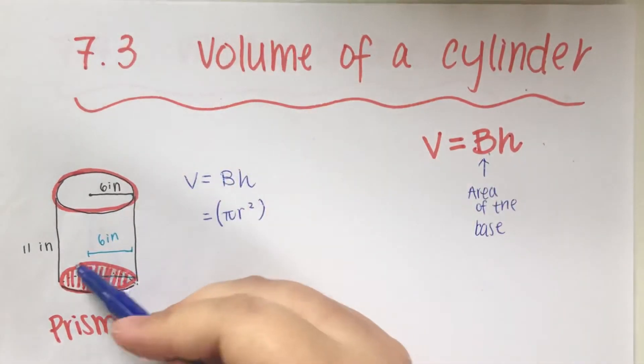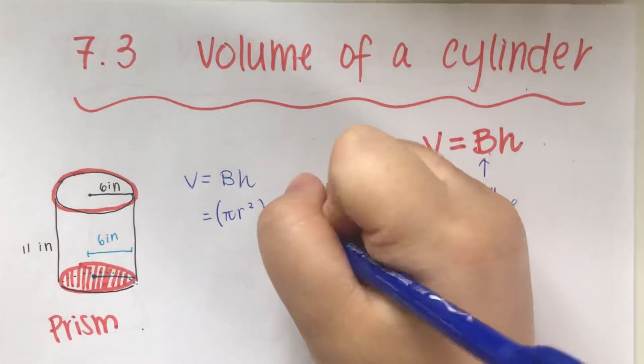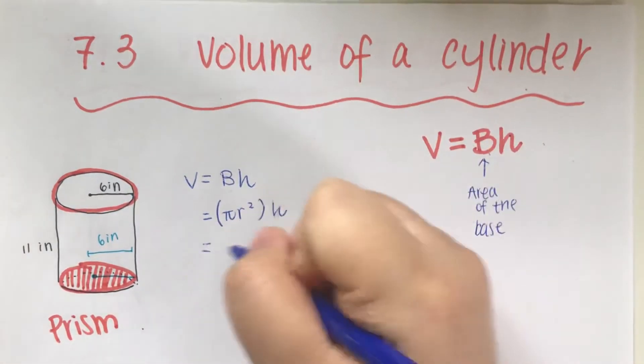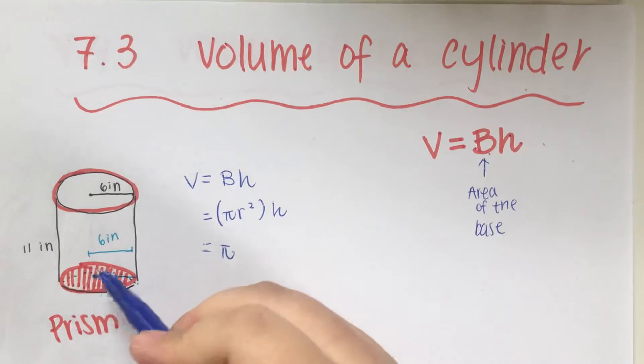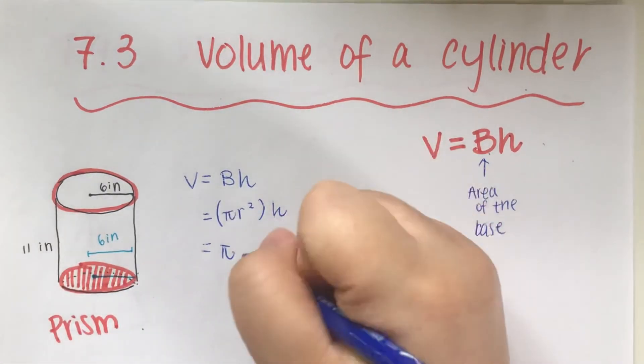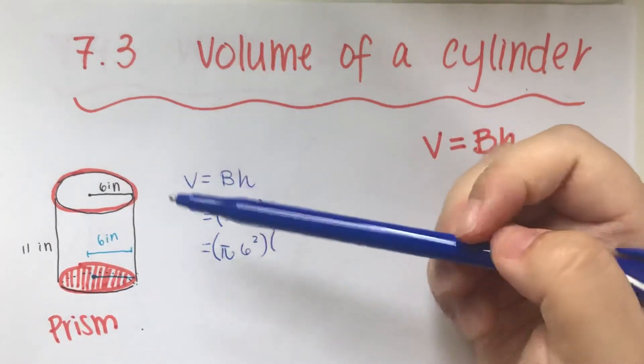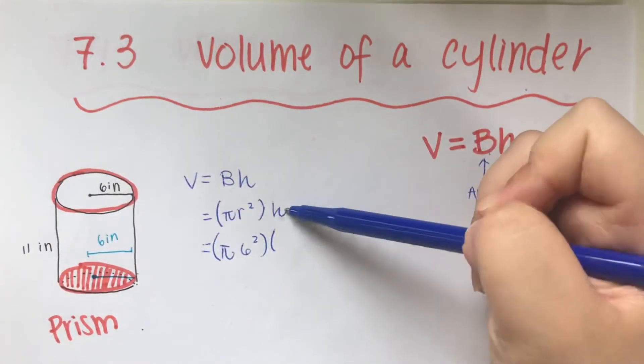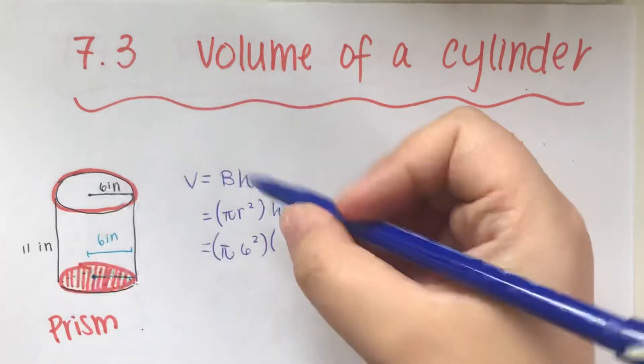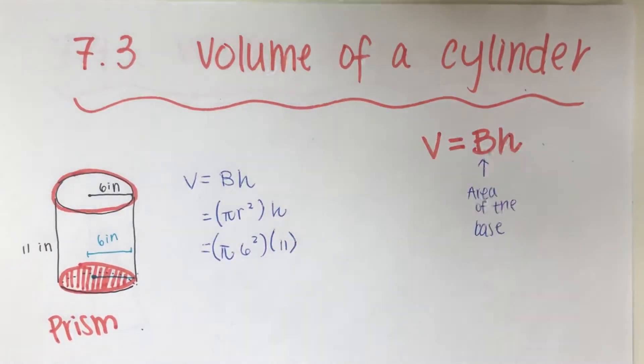That's area of the base, area of the circle, multiplied by the height. So that means it's π times radius, from the center to the edge which is 6 inches, so 6 to the second power, multiplied by—oh I got choked—times h which is the height, 11 inches.